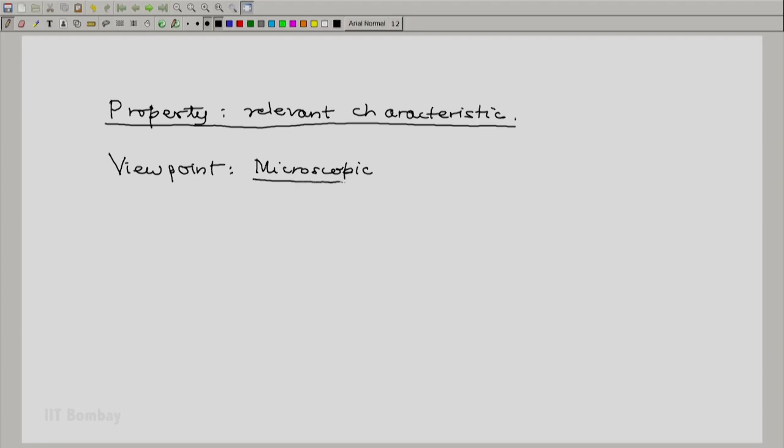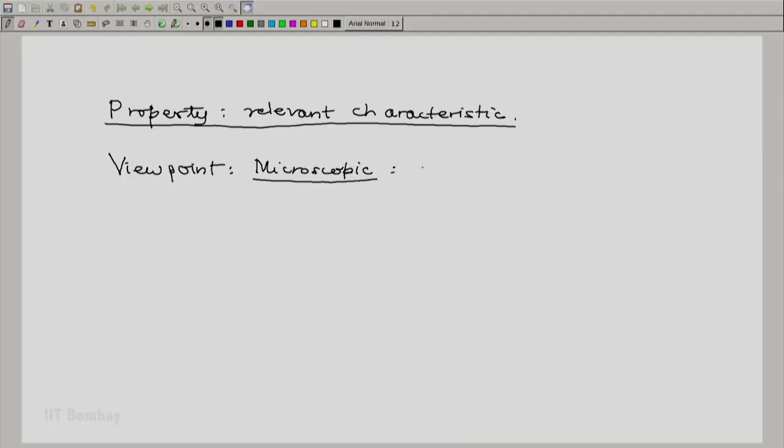So let us look at the microscopic approach. The microscopic approach is the typical approach of a physicist or a chemist. Here we assume that a system is made up of a collection of a large number n of particles. What is the order of n? Very large, 10 raised to 20, 10 raised to 25 of the order of the Avogadro number.